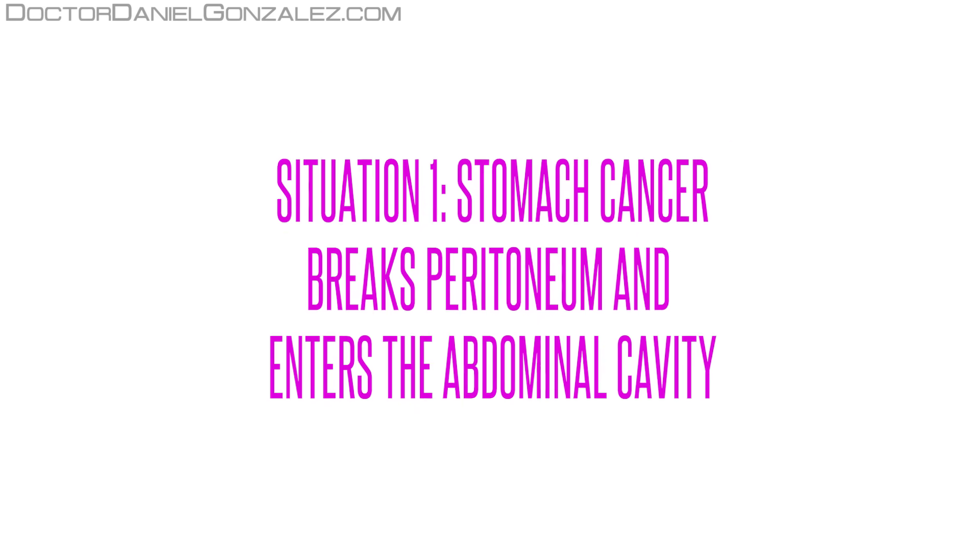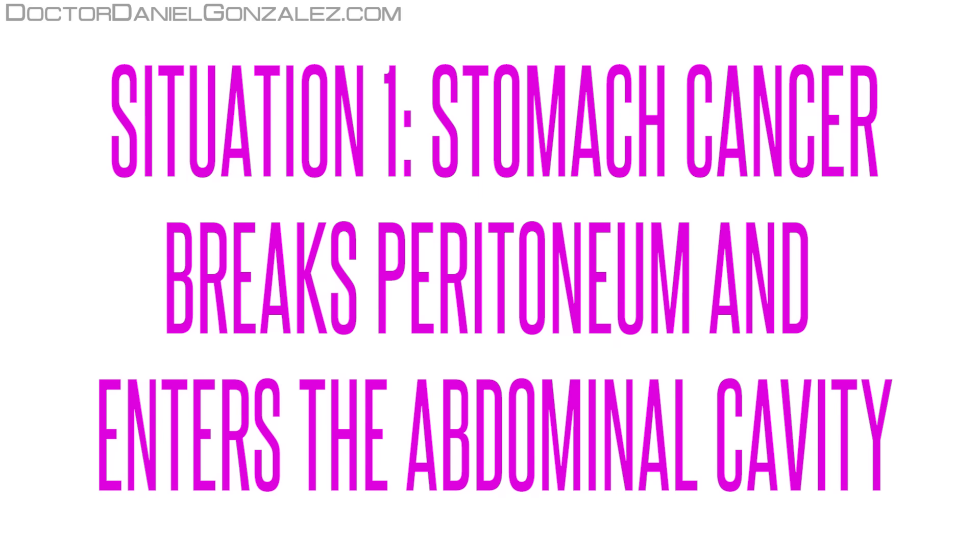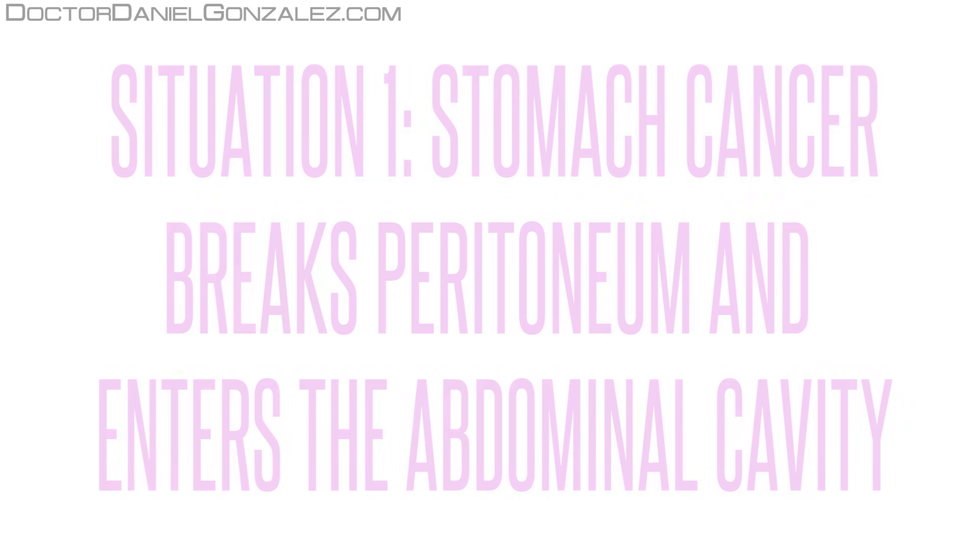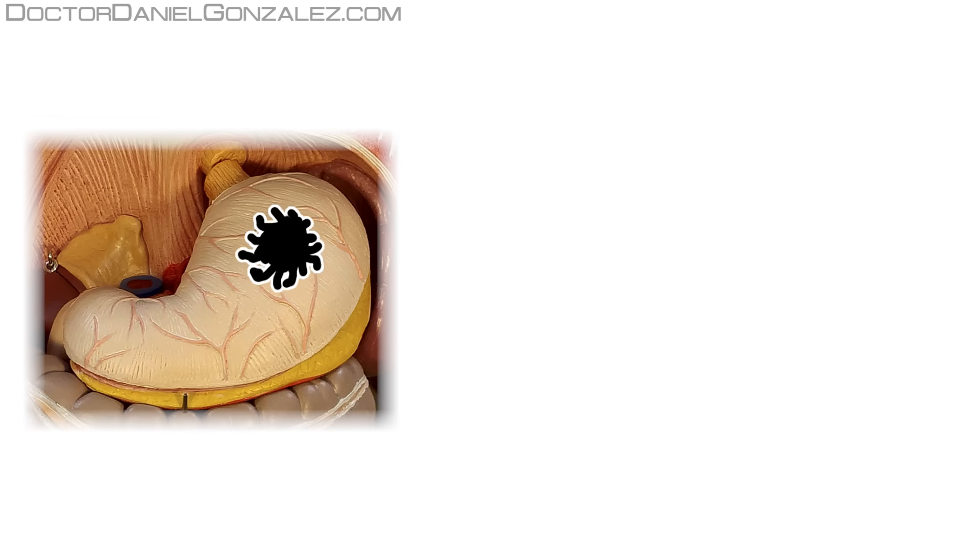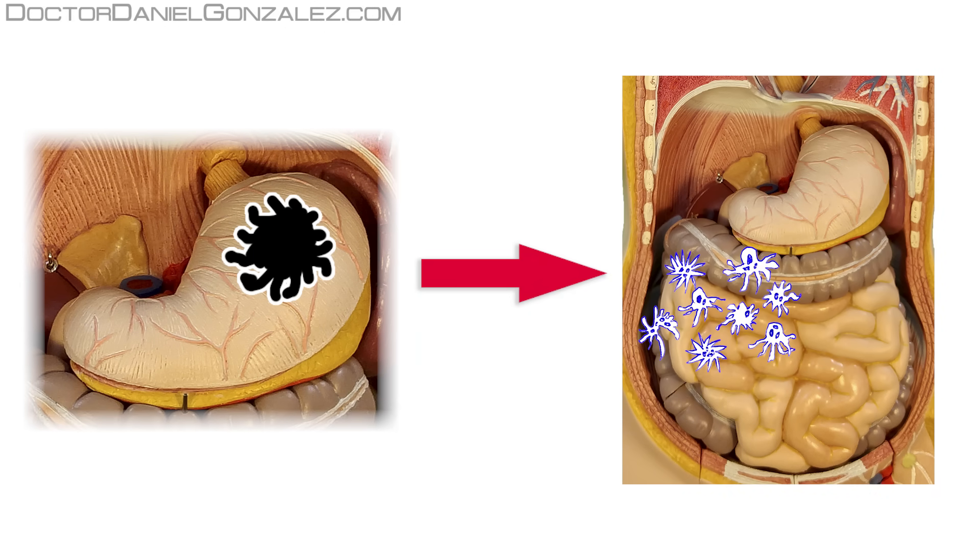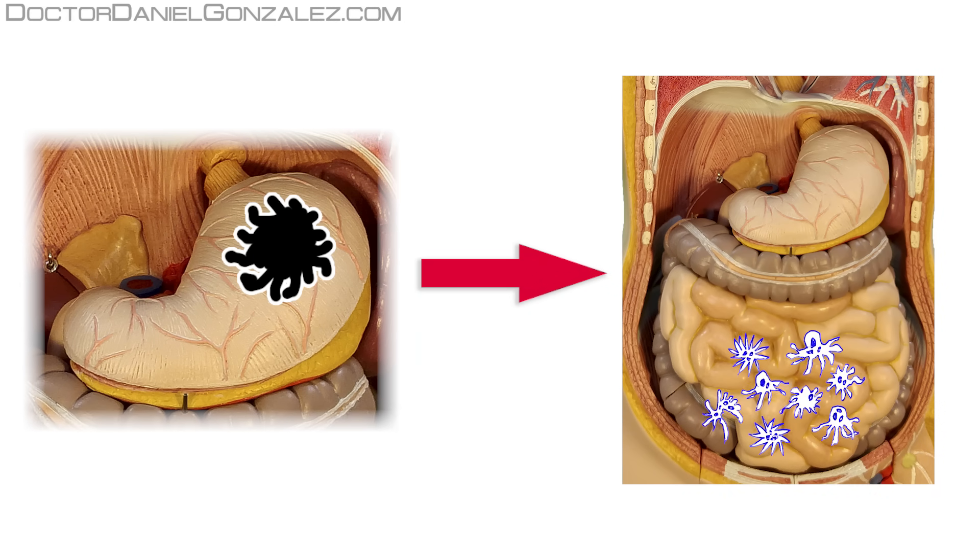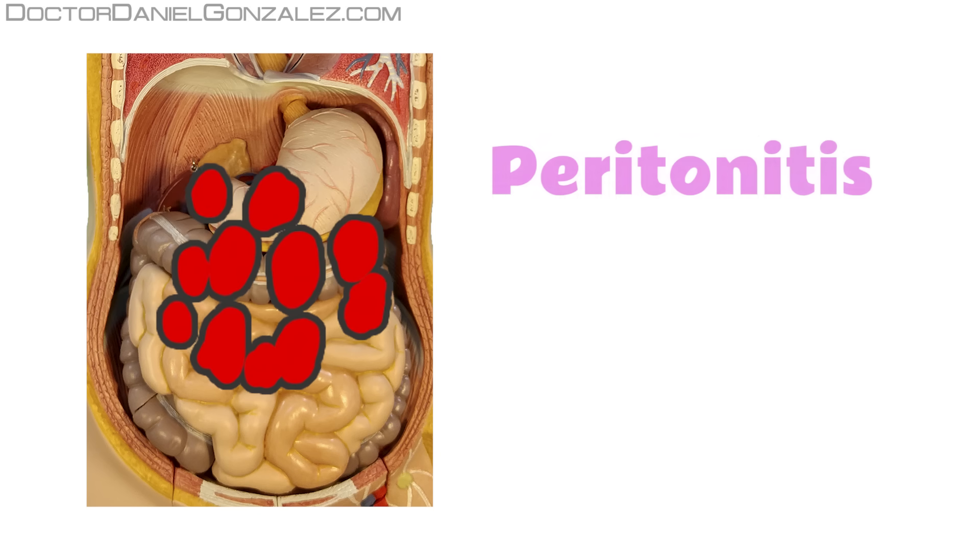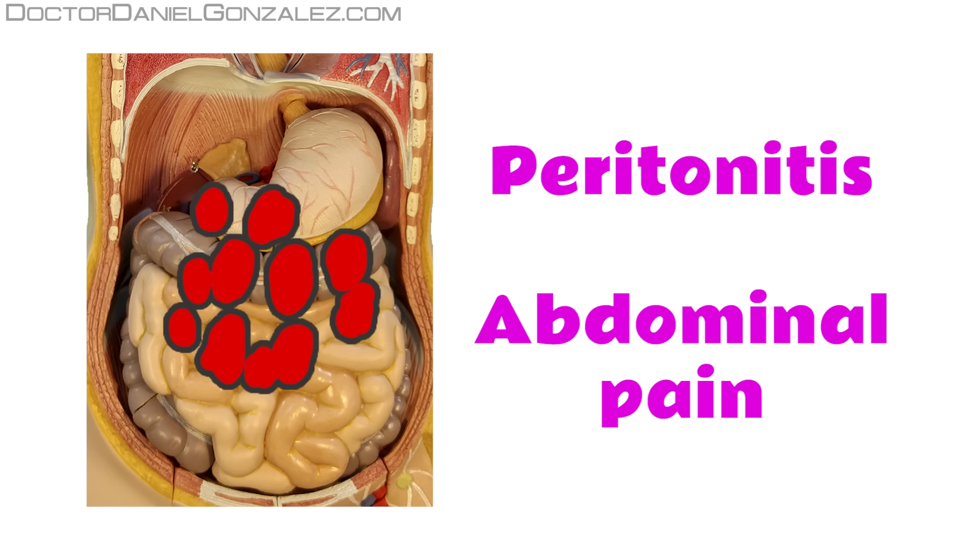Situation 1. Stomach cancer breaks peritoneum and enters the abdominal cavity. When the tumor grows, it can break out the stomach wall. This rupture causes gastric cancer cells falling to the peritoneal cavity and swimming in peritoneal fluid. They end up settling on the surface of any abdominal viscera. Groups of cells can join and grow. These peritoneal implants can cause peritoneal irritation that will be perceived as symptoms of peritonitis with diffuse abdominal pain.